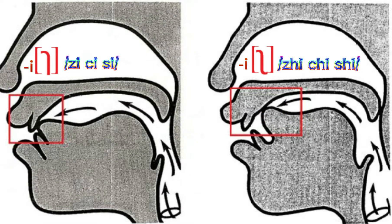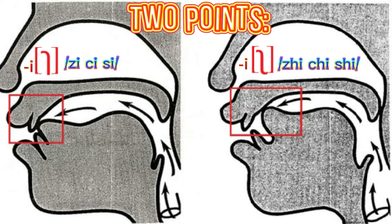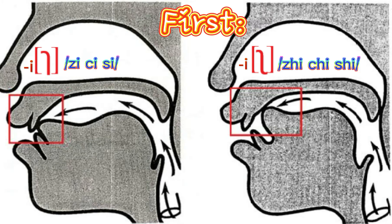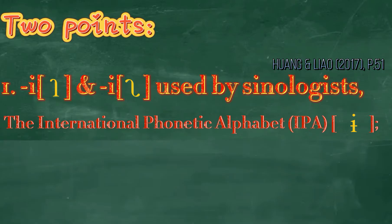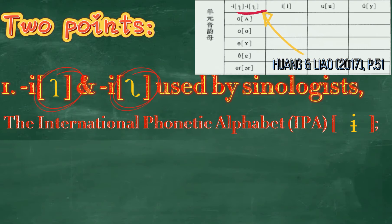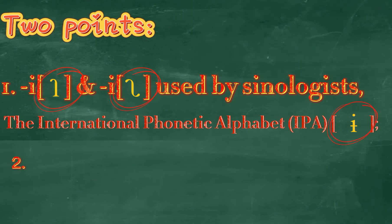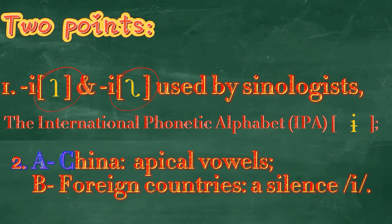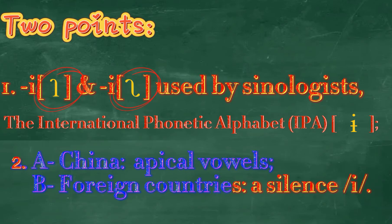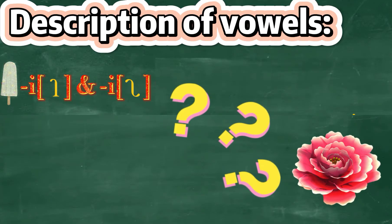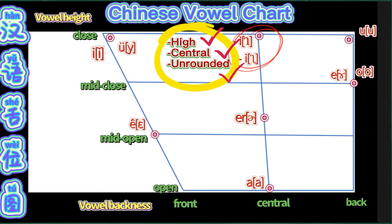To produce these syllables, we must raise up or roll up the tip of the tongue to squeeze out air and make the 'zhi', 'chi', 'shi', 'ri' sounds. For this pair of unusual Chinese apical vowels, there are two things to know. First, the two phonetic symbols for transcription of 'z', 'c', 's' syllables and 'zhi', 'chi', 'shi' syllables are only used by Chinese phonologists — they have not been accepted by the International Phonetic Alphabet. Second, for teaching methods there are two scenarios: in China they are taught as unusual apical vowels, but when Mandarin is taught as a foreign language, they are taught as a silent vowel.